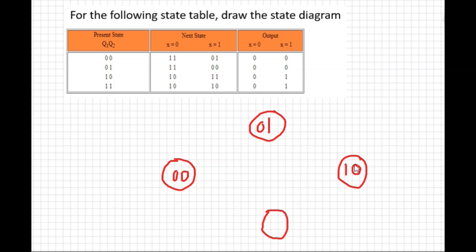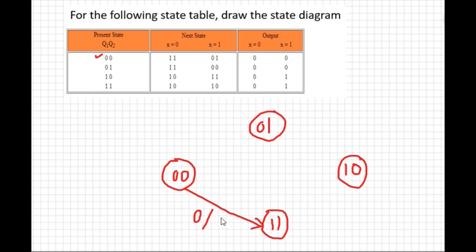Now, state 00 is going to state 11 when x=0. So draw an arrow from 00 to 11. On the arrow, write the next state and then the output. For this transition, the output is 0, so label it x=0 / output 0.